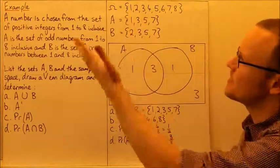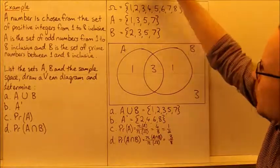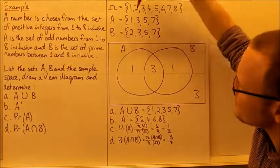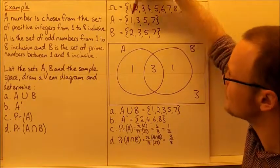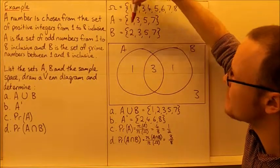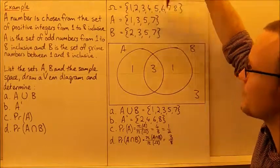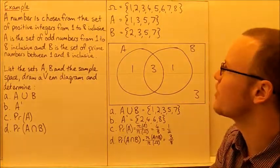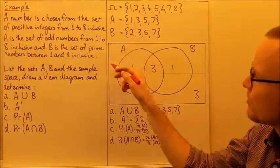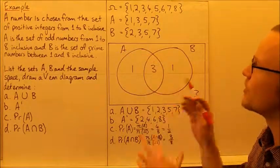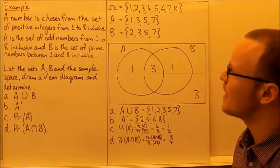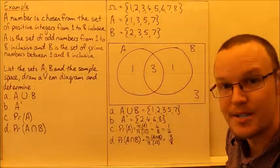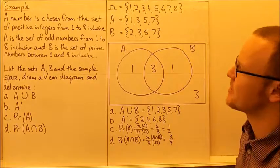So the sample space is 1, 2, 3, 4, 5, 6, 7, 8. A is the odd numbers: 1, 3, 5, 7. B is the prime numbers: 2, 3, 5, 7. To draw the Venn diagram, we box it off to show the sample space, and then we have A and B as our two subsets.